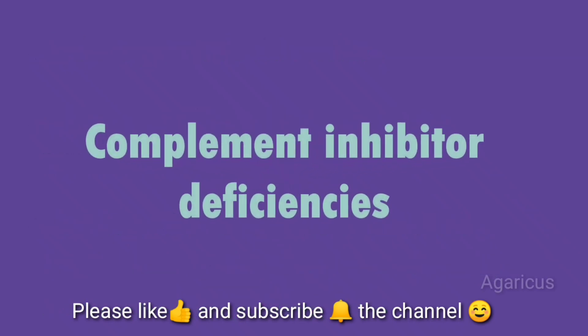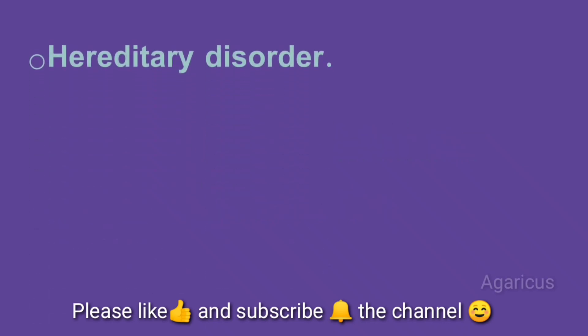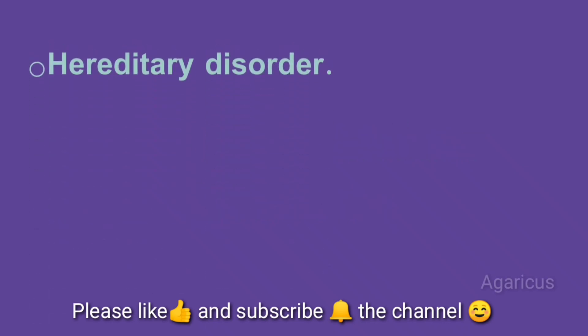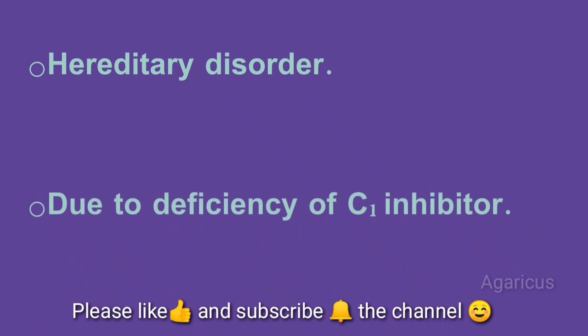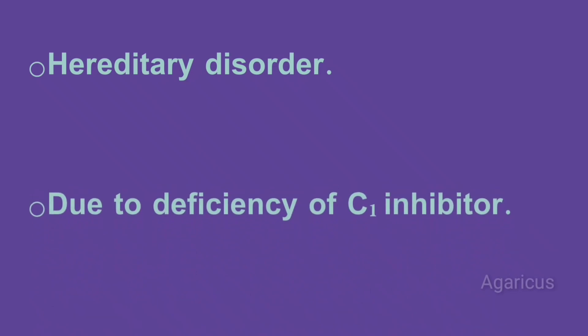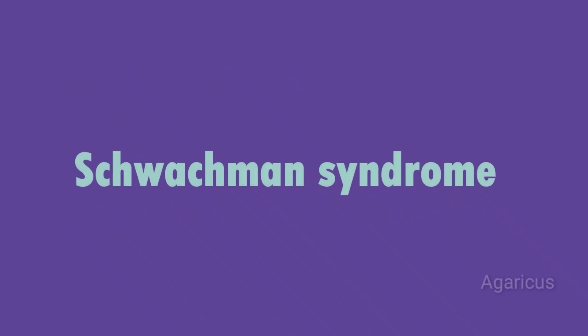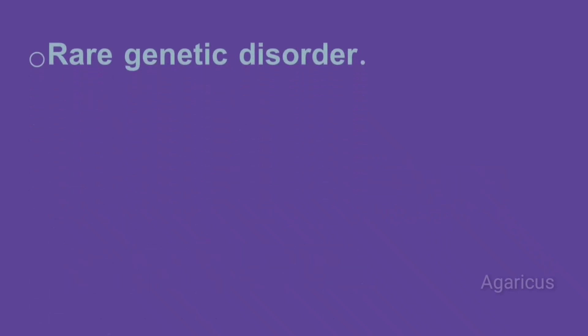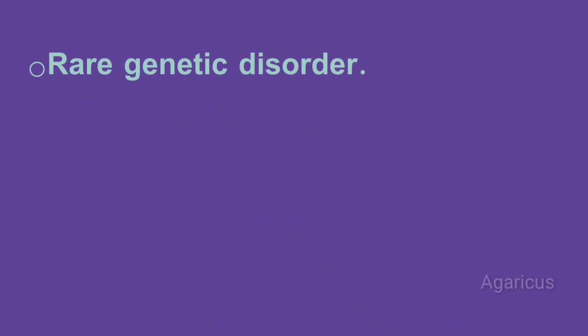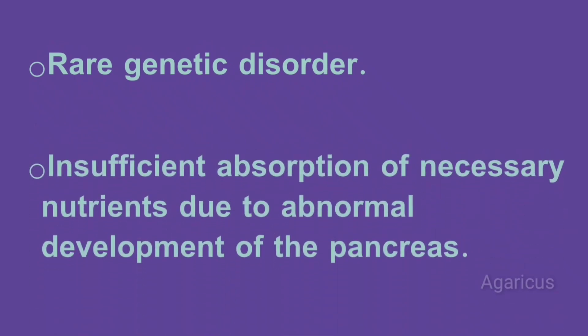Next, complement inhibitor deficiency — a hereditary disorder due to deficiency of C1 gene inhibitor. Next we are discussing Shwachman syndrome, a rare genetic disorder involving insufficient absorption of necessary nutrients due to abnormal development of the pancreas.